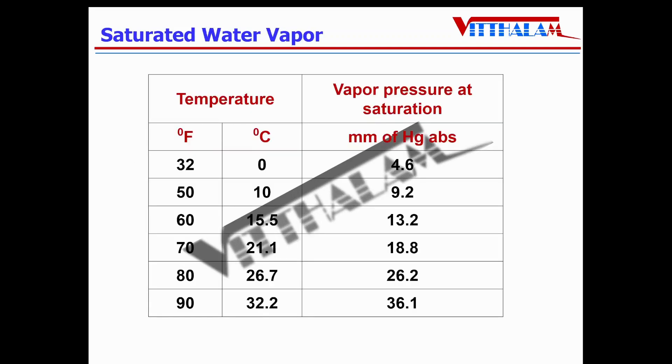So this is the table related to pressures versus saturation temperatures of the water. You can see at a pressure of 9.2 mm of Hg absolute pressure, saturation temperature is 10 degrees Celsius. It means if the air temperature is about 10 degrees Celsius, then the water in the air will always remain in the vapor form.